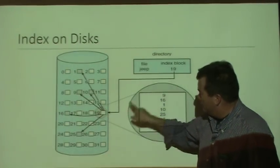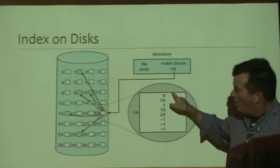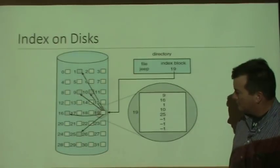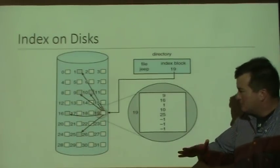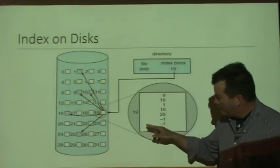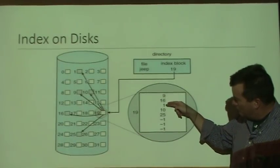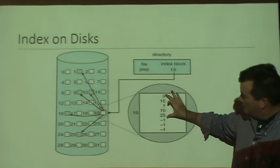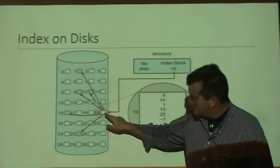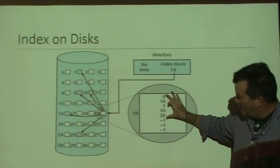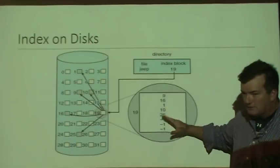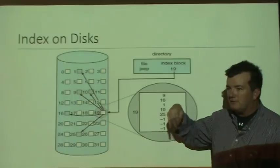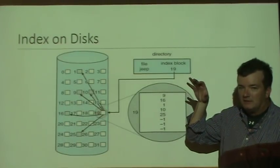When you create an indexed file, the first block you go to is the one that has your index. The index tells you where all the parts of the file are. An interesting operating systems question is: if the index fits in a block but leaves extra space, should you start the file data in that same block, or start it on a fresh block?